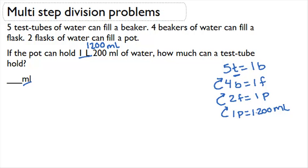If one pot has 1,200 milliliters and there's two flasks in each pot, I'm going to have to take my 1,200 milliliters and divide by two. This will give me 600 milliliters, which is the volume of one flask.